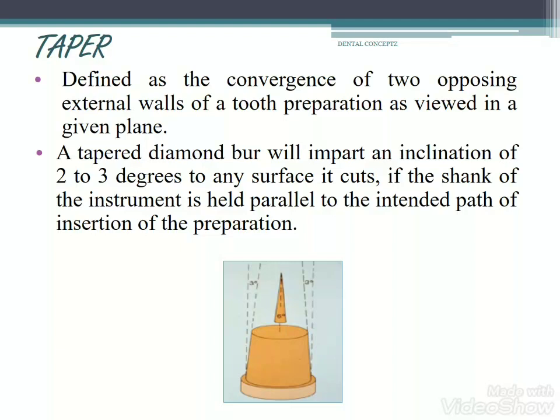There are various factors which affect the retention and resistance form. The first is taper. Taper is defined as the convergence of two opposing external walls of a tooth preparation as viewed in a given plane. A tapered diamond bur will impart an inclination of 2–3 degrees to any surface it cuts if the shank of the instrument is held parallel to the intended path of insertion of the preparation.